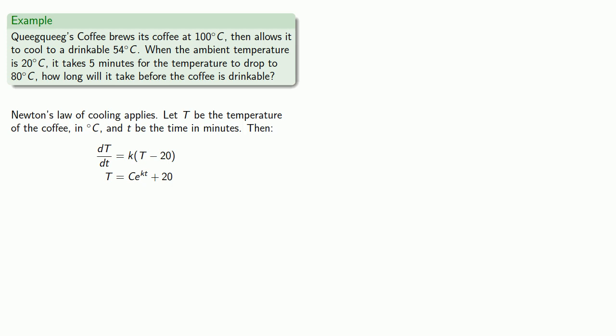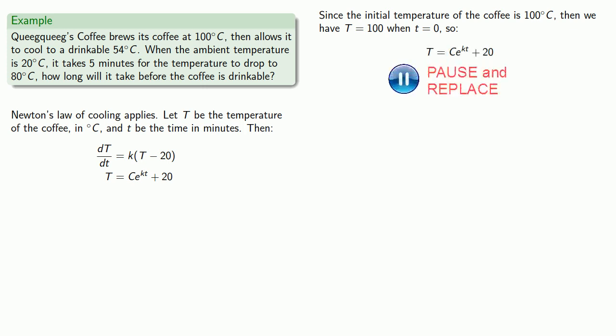So how can we find those unknown constants? Well, let's start off with some of the things we know. Since the initial temperature of the coffee is 100 degrees Celsius, then we have our temperature equals 100 when t is equal to 0. So we can substitute those values into our function, then solve for C. And we find that C is equal to 80.